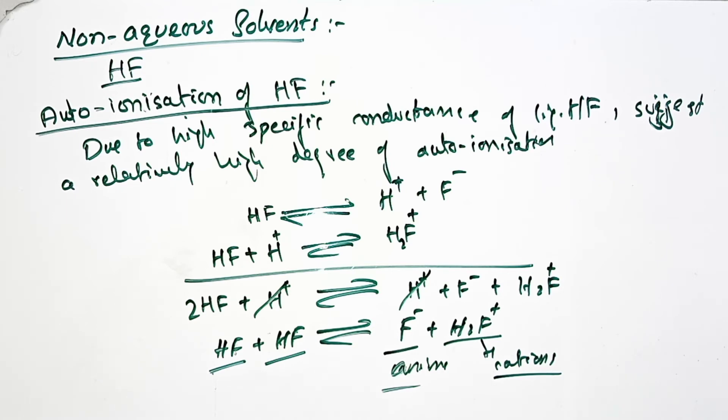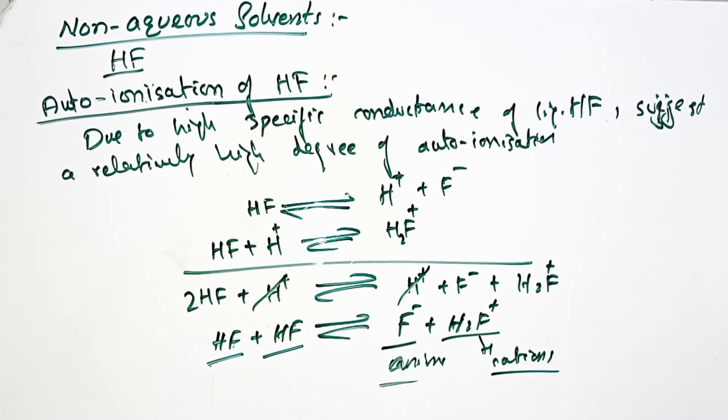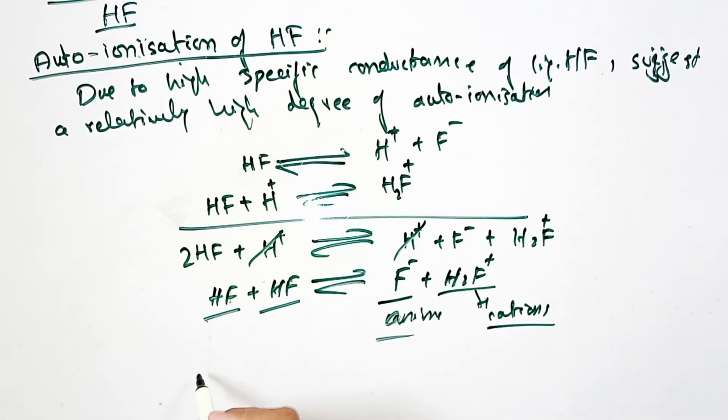Also you can write this in another way, that when 3HF, it will give us H2F+ and it can give us HF2-. That will be solvent cation, that will be solvent anions.